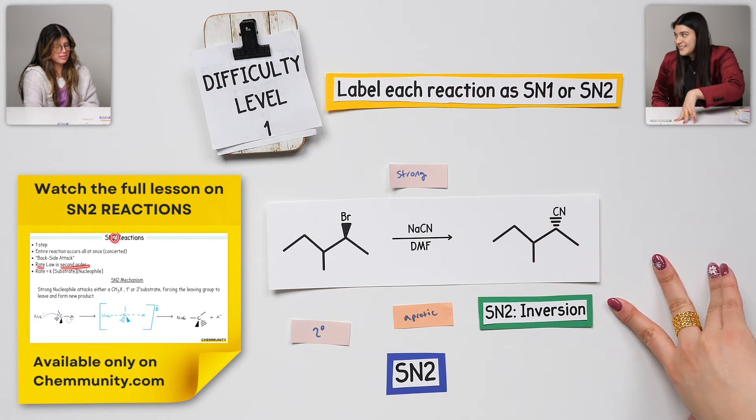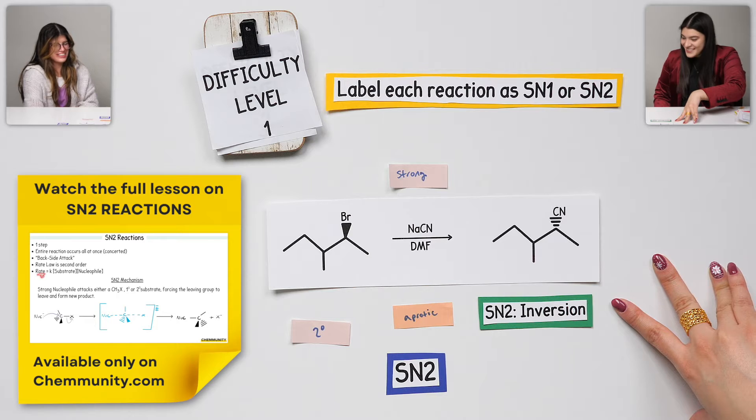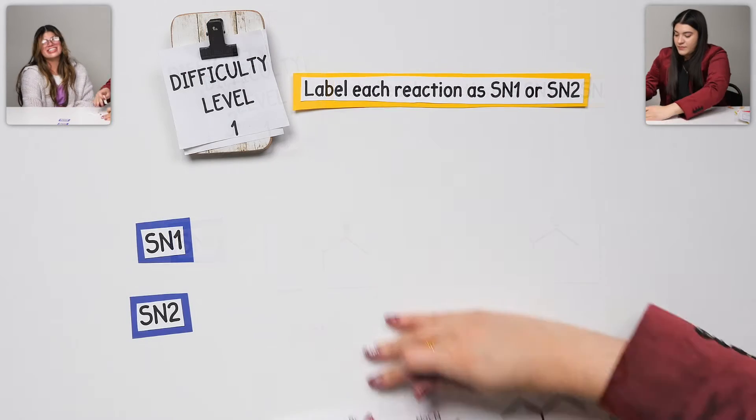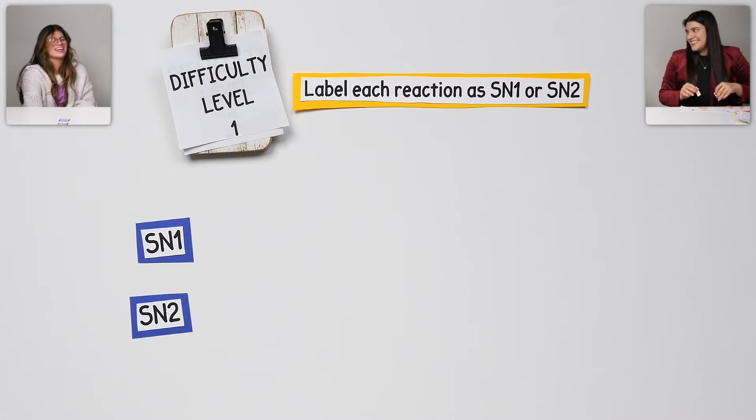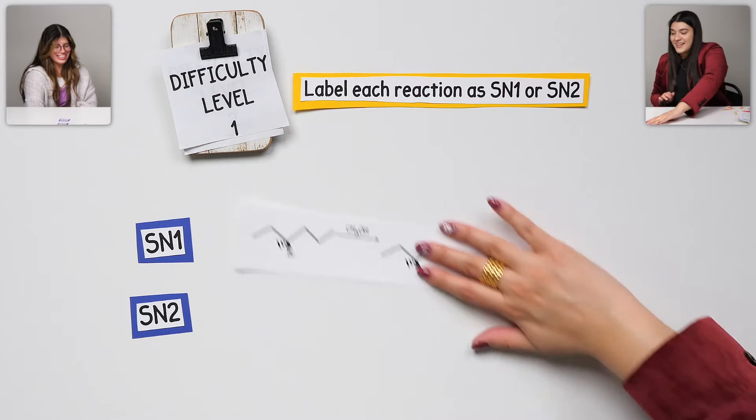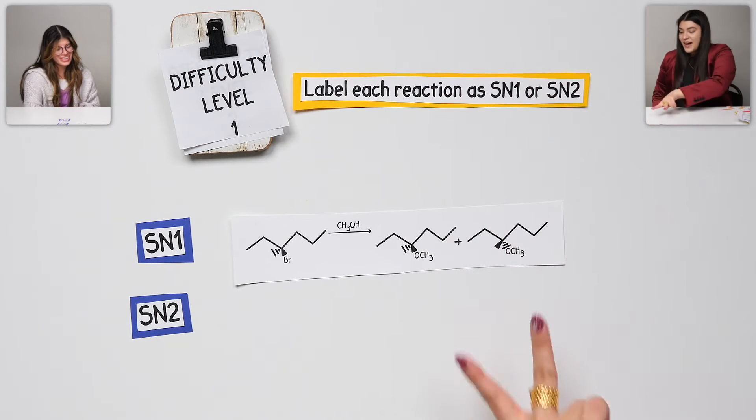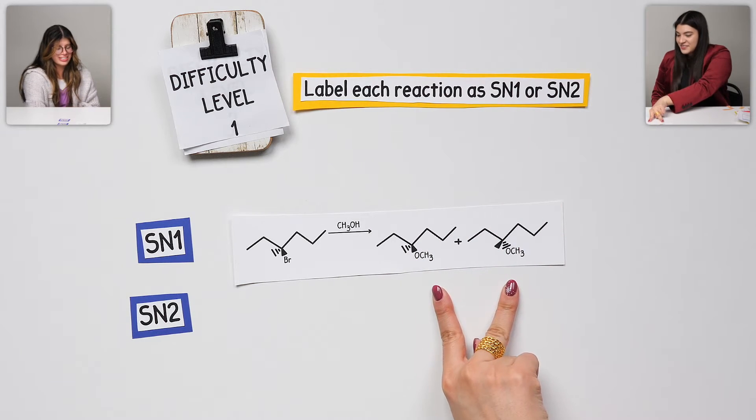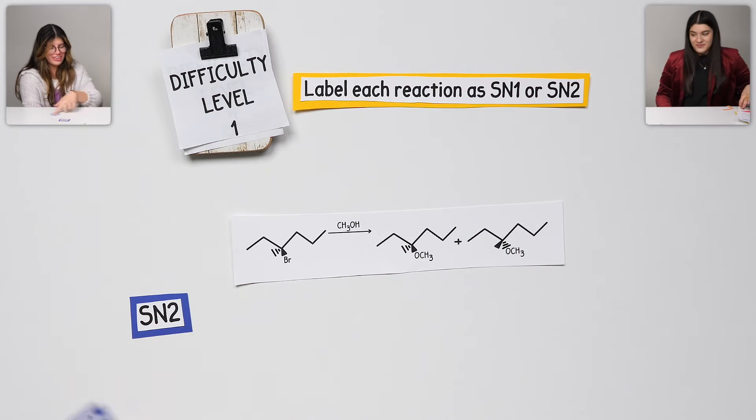Now, we're going to see in a second something else with stereochemistry. Isn't it called racemization? Yes. So, I'll bring this one. It's exactly what you're saying. Where we have two products now. What do we think this is? This one will be SN1.